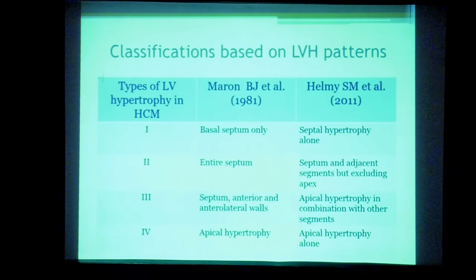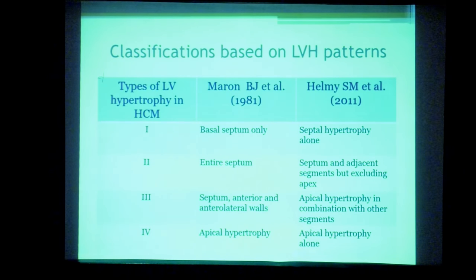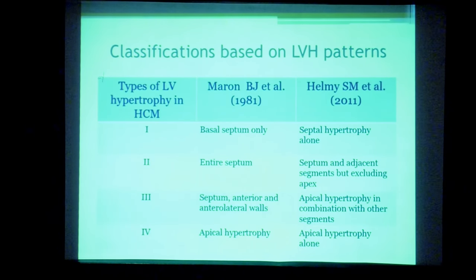As early as 1981, Marin et al. described different subtypes of hypertrophy in HCM, classifying them into types 1 through 4 based on which part of the ventricular myocardium is involved — whether only the basal septum, the entire septum, the anterolateral wall, or the apex. A similar classification was proposed by Helmy et al. in 2011: type 1 is septal hypertrophy alone; type 2 involves the septum with adjacent segments excluding the apex; type 3 is apical hypertrophy with other segments; and type 4 is pure isolated apical hypertrophy.